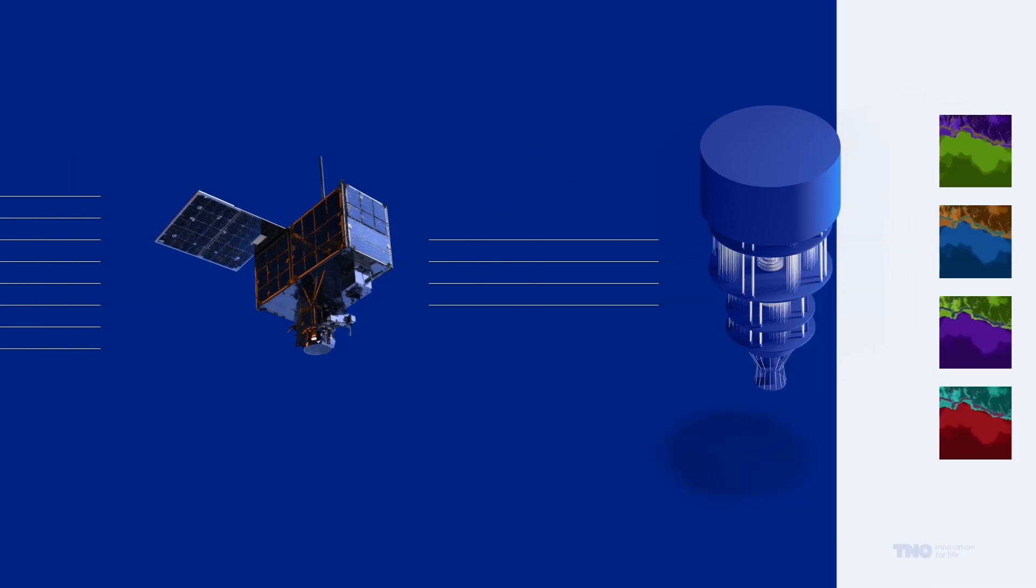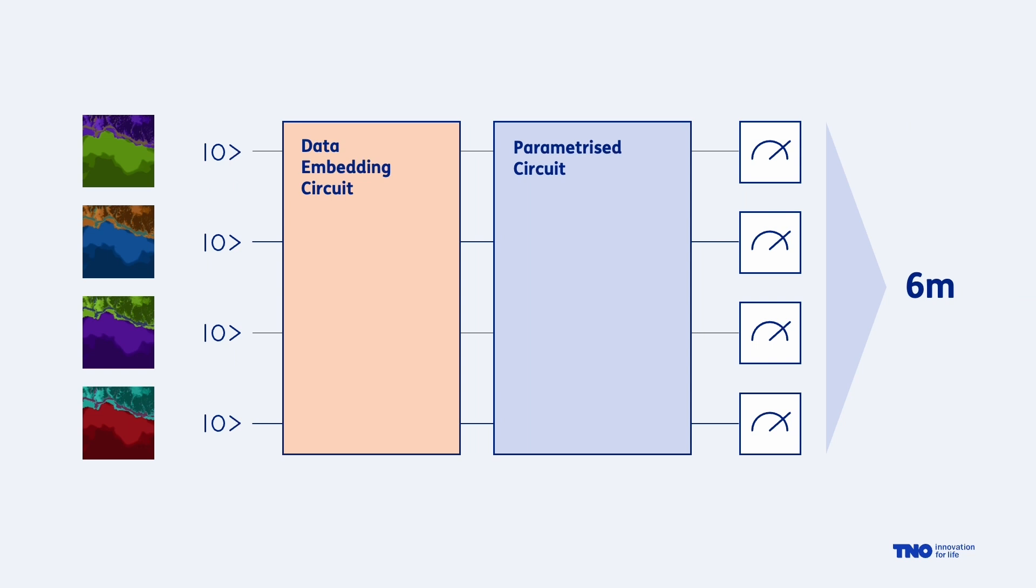It is also quite interesting to note that for the described use case we only need four qubits. So the limitation here does not actually come from the amount of qubits necessary but rather from the quality of those four qubits as well as the quality of the necessary gate operations.